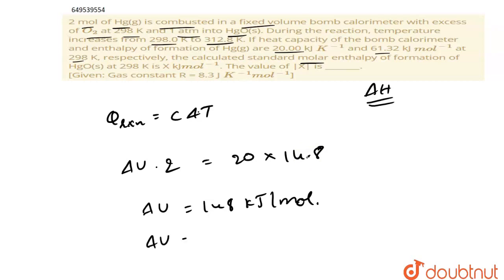148 kilojoule per mole. So del U, they given that it's an exothermic reaction, that's why it will become minus 148 kilojoule per mole.